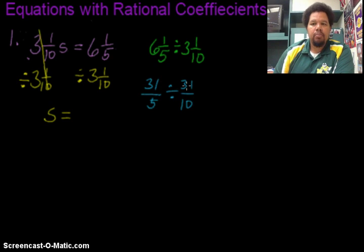Once they're in improper fraction form like 31 over 5 divided by 31 over 10, because we're dividing by a fraction, we actually do the division by multiplying by the reciprocal.